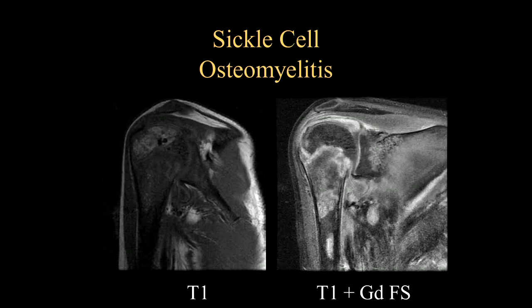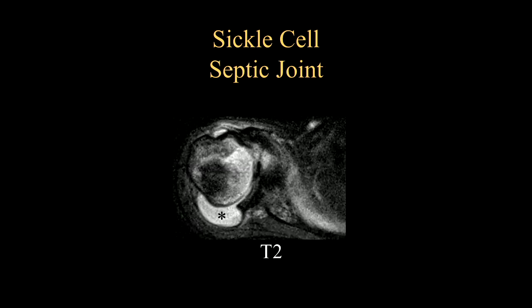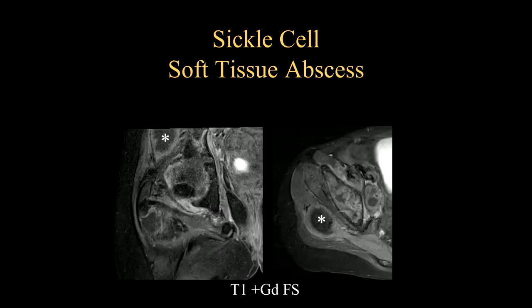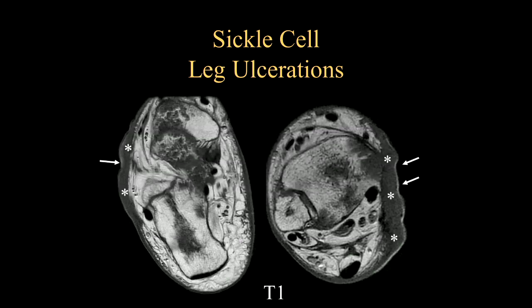Here's a patient who has sickle cell osteomyelitis. Looking at the T1 and T1-enhanced images on the right, you can appreciate the abnormal replacement and abnormal marrow enhancement in this patient with infection due to salmonella. Here's a different patient where you can appreciate this large glenohumeral joint effusion, which also proved to be septic arthritis with salmonella infection. Soft tissues can also become infected and can have areas of infarction. In this case, this was a seated salmonella abscess within the gluteal muscles of a child.